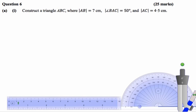This is the 2016 Leaving Certificate Ordinary Level Paper 2, and we're looking at question number 6. Part A says construct a triangle ABC where the length of AB is 7cm, the size of angle BAC is 50 degrees, and the length of AC is 4.5cm.